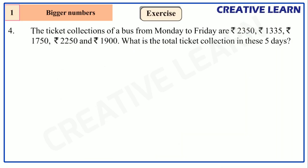Here we have the next problem. The ticket collections of a bus from Monday to Friday are: 2350 rupees, 1335 rupees, 1750 rupees, 2250 rupees, and 1900 rupees. What is the total ticket collection in these five days?